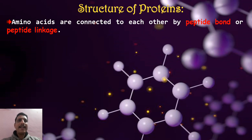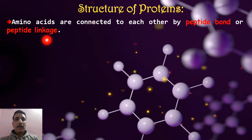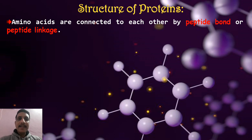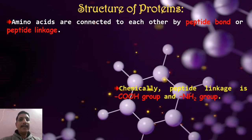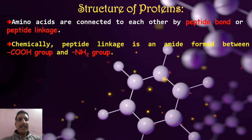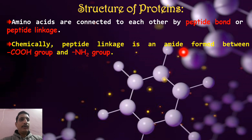Amino acids are connected to each other by a bond called a peptide bond or a peptide link. Just recall — in carbohydrates we studied the glycosidic bond. In this concept we will discuss the peptide bond. Two amino acids are connected to each other by this peptide bond. Peptide bond chemically is an amide bond — it is an amide functional group.